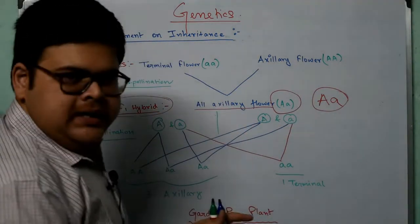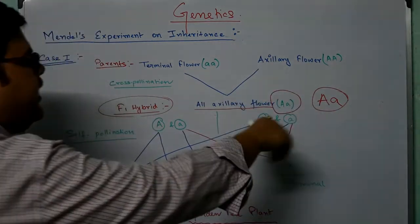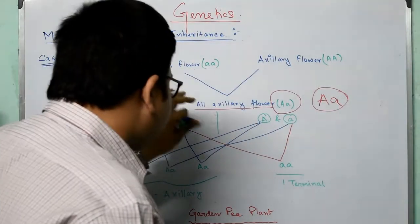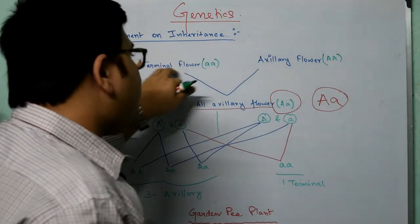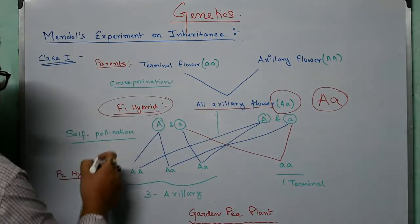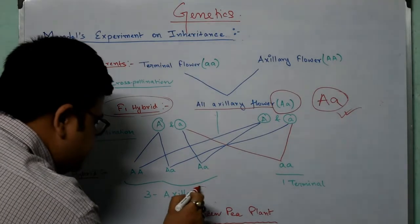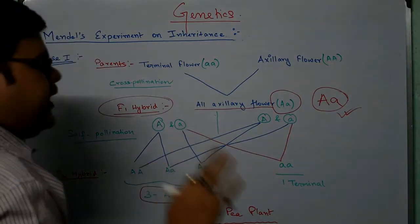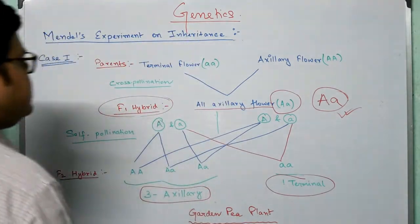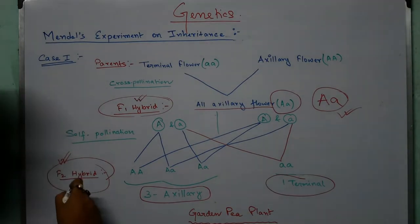Please listen carefully: he then self-pollinated between these axillary flowers bearing one capital A and one small a. When he self-pollinated, he found three axillary flower-bearing plants and one terminal flower-bearing plant in the second hybrid generation (F2). So the first hybrid generation gave all axillary flowers, and the second hybrid generation gave three axillary and one terminal.